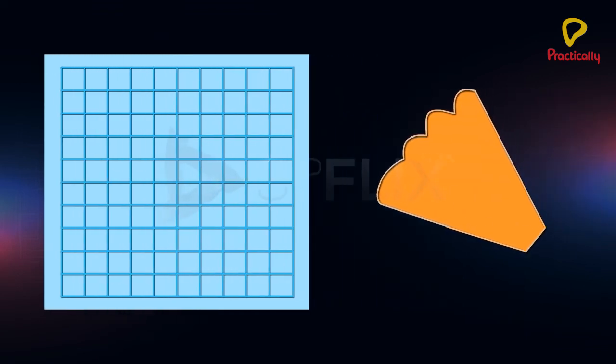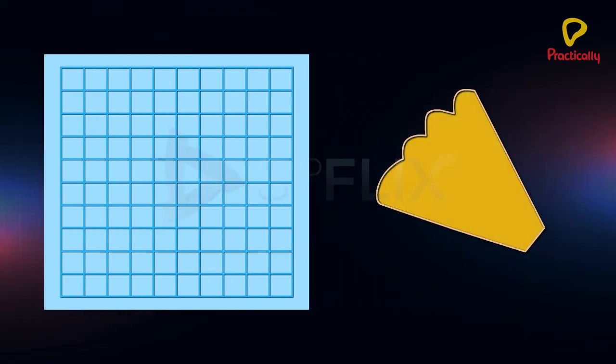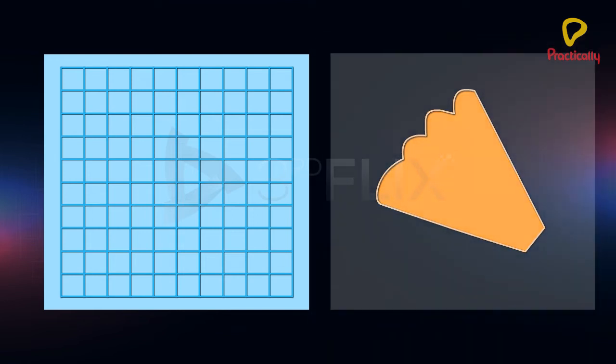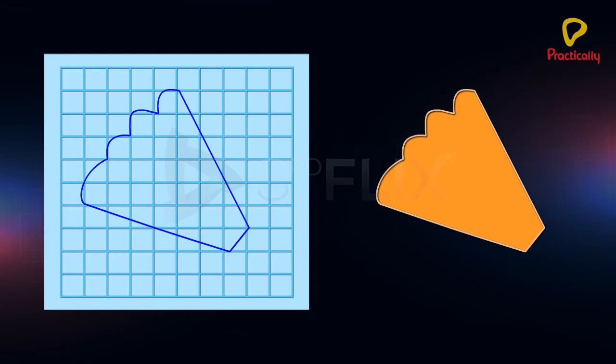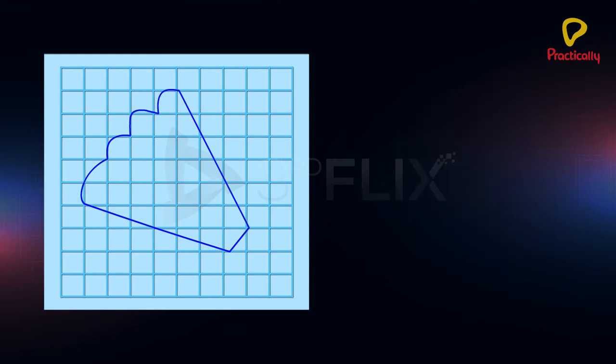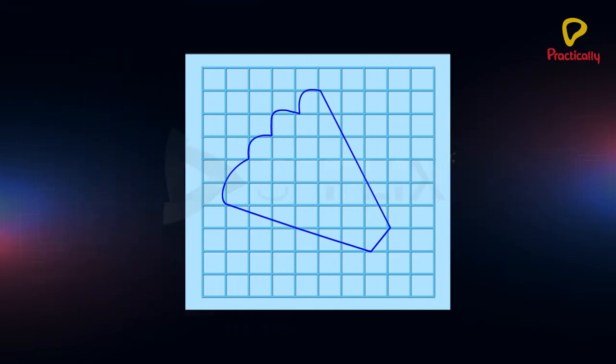Suppose we have to find the area of a given figure. We take a traced copy of the figure on a transparent paper and place it on a sheet of squared paper. Let us calculate the area of this figure.